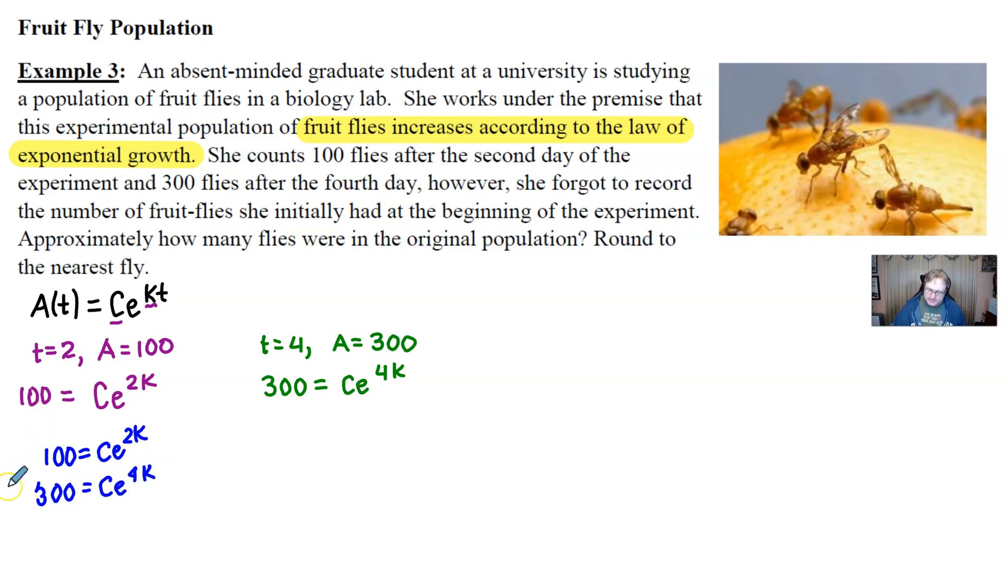And a system of equations is typically denoted with this nice little brace that kind of groups them together that says, hey, we want you to solve. And so lots of different ways you can solve. What I think might be best is to perhaps solve for c in each of the two equations. You would just divide both sides by e^(2k). And in the case of this version, we'll divide both sides by e^(4k).